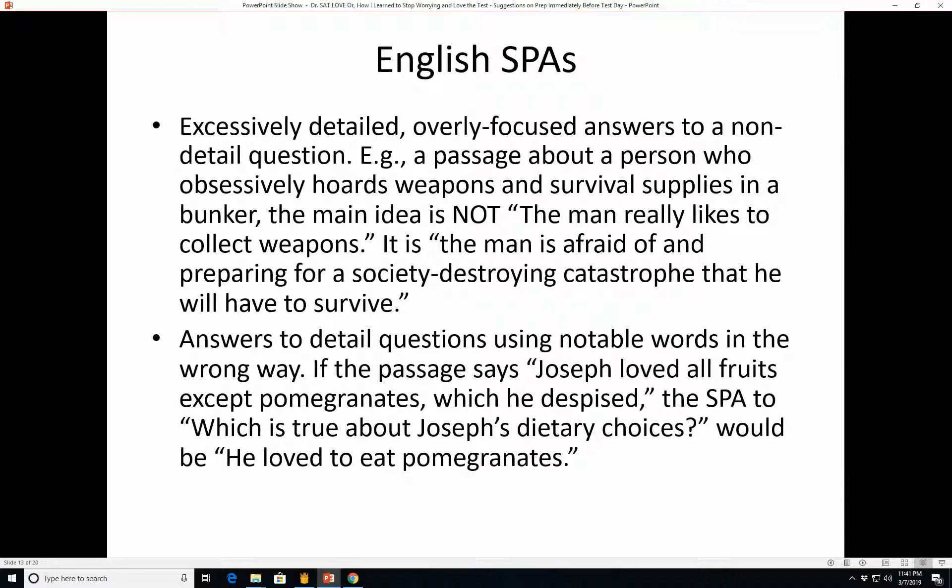All right, English sucker punch answers. Excessively detailed, overly focused answers to a non-detail question. That is a passage about a person who obsessively hoards weapons and survival supplies in a bunker. The main idea is not the man really likes to collect weapons. It's the man is afraid of and preparing for a society destroying catastrophe that he will have to survive. Answers to detailed questions using notable words in the wrong way. So if the passage says, Joseph loved all fruits except pomegranates, which he despised, they know the word pomegranate is going to stick out in your brain. So the sucker punch answer would be, which is true about Joseph's dietary choices, you know, the sucker punch answer would be, he loved to eat pomegranates. Because, you know, the part of your brain that's in a hurry is, look, it says pomegranate. It must be right. I remember reading pomegranate. Yeah, you have to read it. So no, if he loved all fruits except pomegranates and he loved to eat pomegranates is not the right answer.